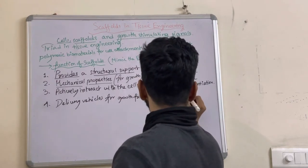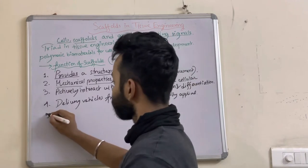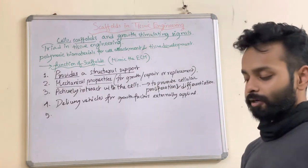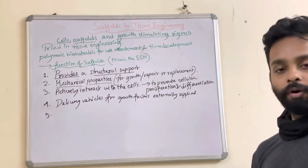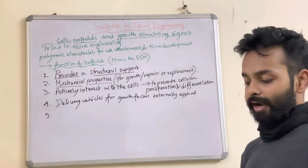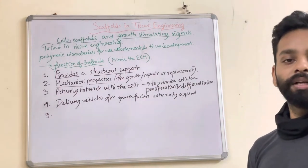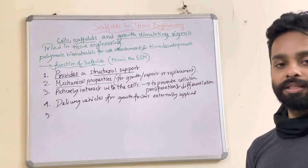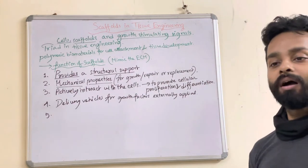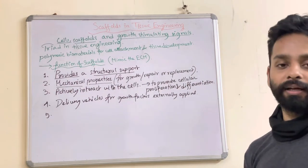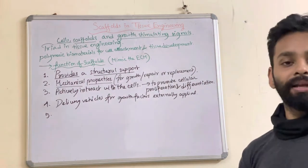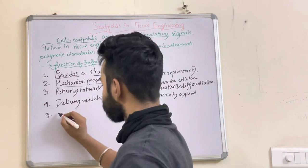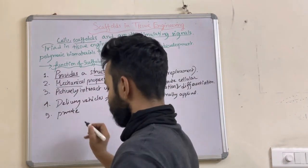Another important function is that scaffolds provide a void volume for enabling vascularization and new tissue formation during the process of tissue remodeling. Some dynamic behaviors of tissues are influenced by these scaffold materials, especially when fabricated with externally applied growth factors and hormones to mimic tissue dynamic behaviors, thereby promoting vascularization.